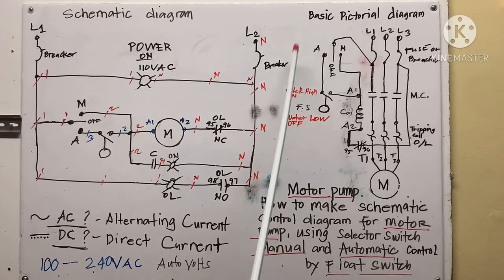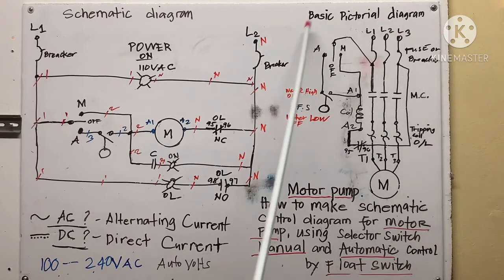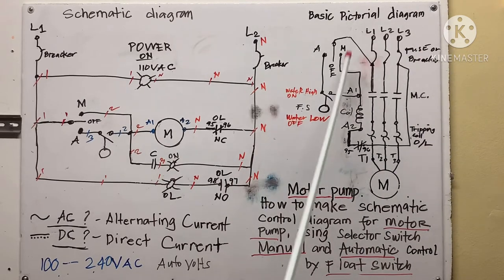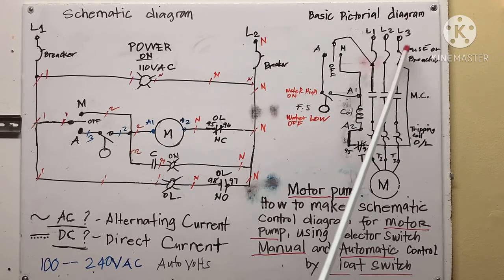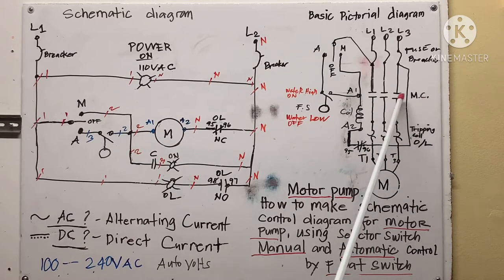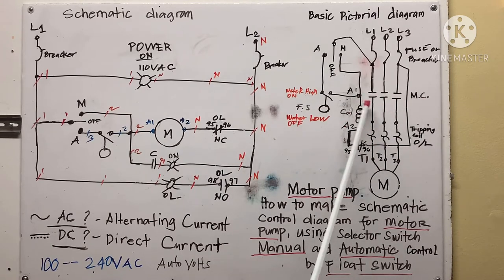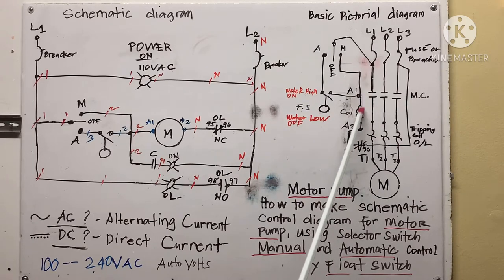I made this pictorial so that everybody can easily understand. This is line one, line two, line three. This is a fuse or breaker. This is a contactor — magnetic contactor. This area is the tripping coil, the overload tripping coil. This is the normally closed overload, and this is the coil for the contactor.